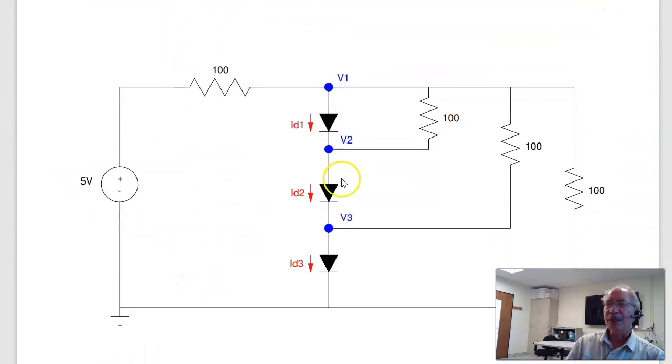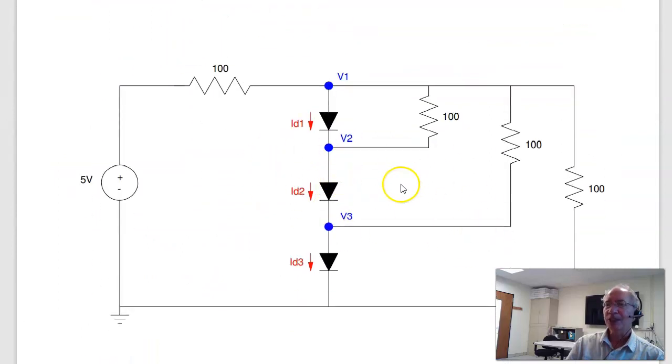Last problem. Given this circuit, write the node equations and solve. This one I can't use graphical methods because I have 6 unknowns. I need 6 dimensional paper, and I don't have any of that on hand. So graphical methods don't work, but the other methods do work.